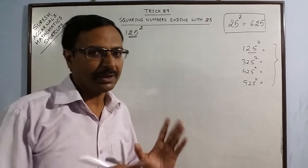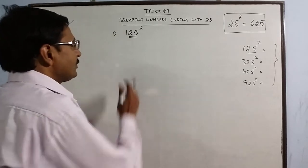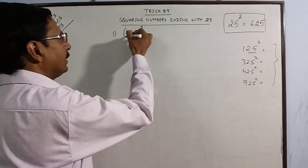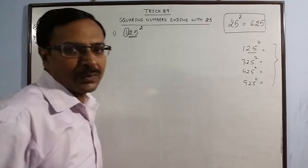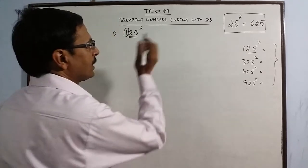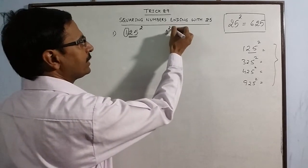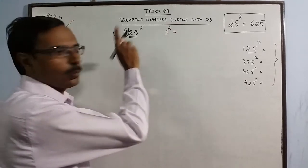What about the remaining portion of the answer? Now, once we leave 25, we are left with 1. So we are doing that in 3 steps now. See, first we calculate the square of the remaining part. 1, 1 square is 1.